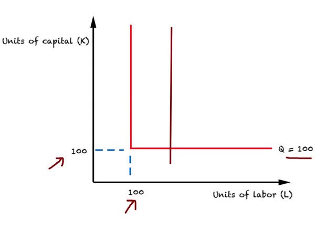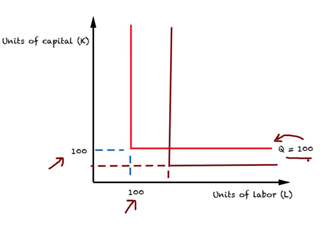Now suppose there is another technology available. Let me draw another L-shaped figure and join these. This again represents 100 units of output as well. So in both places you can produce 100 units of output. And what you require here is more workers and less capital — say 150 workers and 50 units of capital. So with these two technologies, you are able to produce the same level of output but using different combinations of labor and capital.